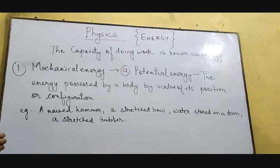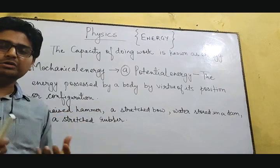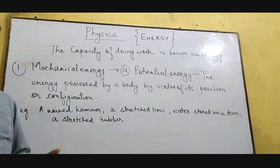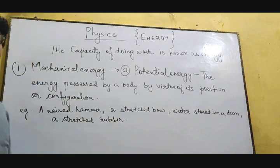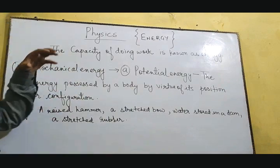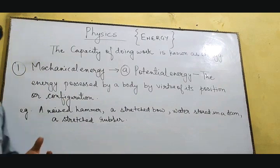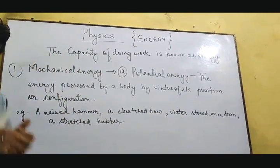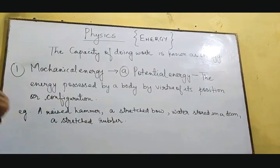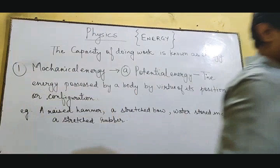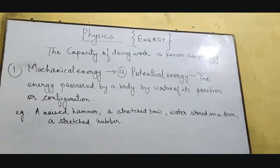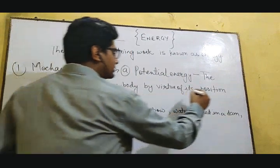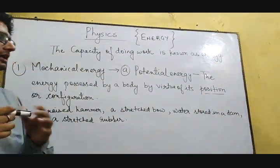For example, a raised hammer: if a hammer is kept on the floor it is not having any energy because it is at rest. But when you raise the hammer and then strike on an object, it will go into the object with a huge force and create a lot of impact. So on raising the hammer to a height, it gains some amount of energy — that is known as potential energy. This is potential energy due to its position, because the body has been brought up to a certain position.